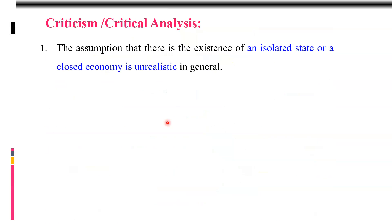Dear students, let us see the important criticisms made by various scholars, economists, and geographers. First: the assumption of an isolated state, or a closed economy, is unrealistic in general. It may have been possible in 1826, but nowadays it is impossible to find such conditions. This model was based on Van Thünen's own data and experience in Germany and cannot be applied universally. Most geographers and economists criticized this first assumption.